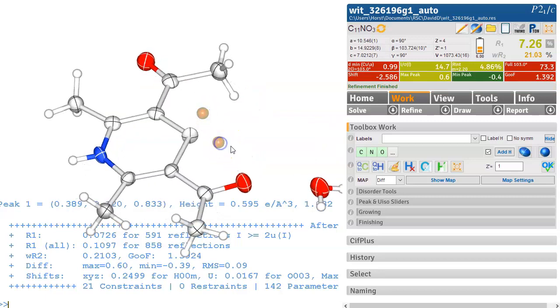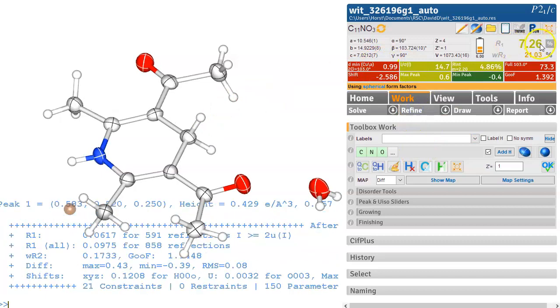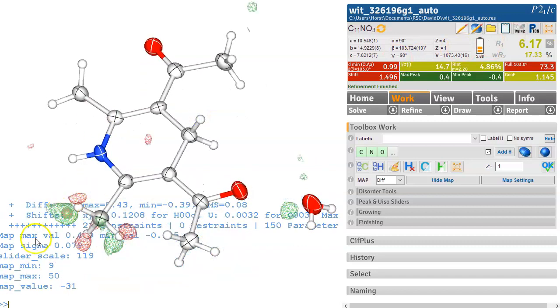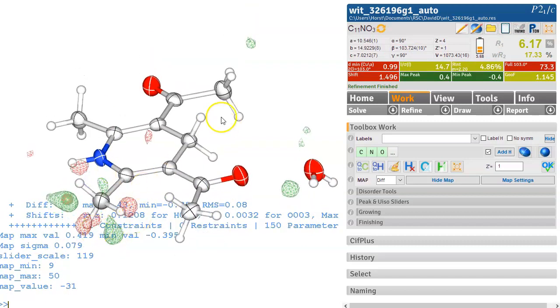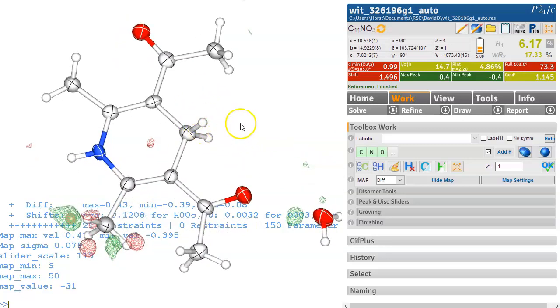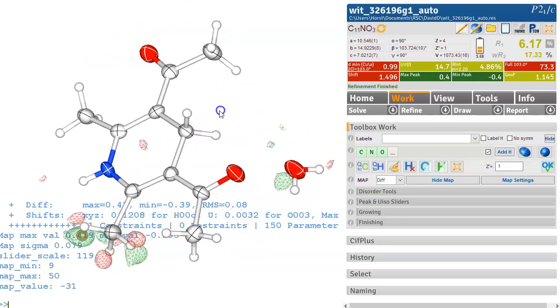You can just select those and make them a hydrogen so we type name H so we make them into hydrogen and refine this. There are vectors 7.26 down to 6.17 so they're definitely real and Ctrl M now there's something wrong where these hydrogens are but these ones are looking quite good so there's no doubt that this is a CH2 over here.